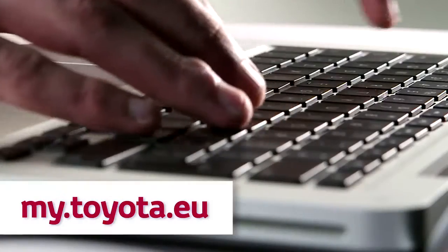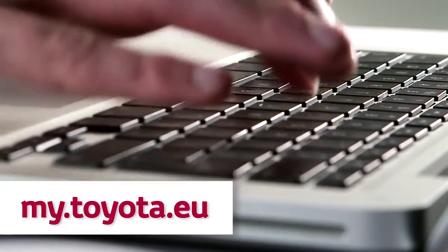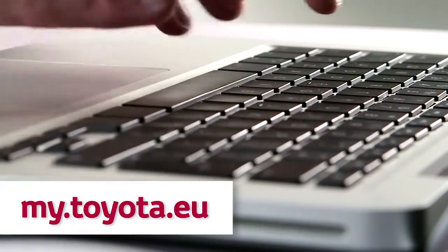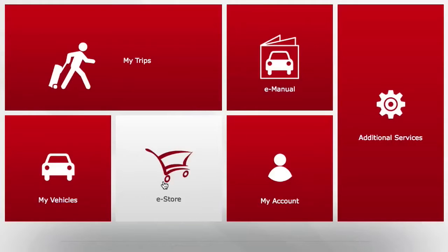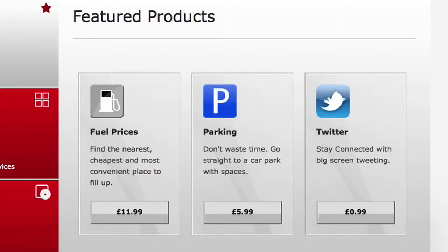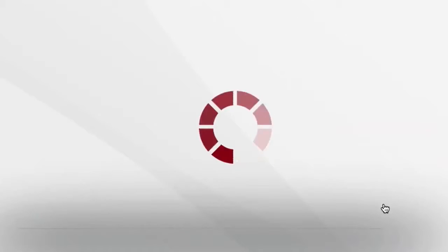To purchase apps for your device, you'll need to log onto the Toyota Customer Portal. Click on eStore to see our selection of Toyota apps, including Twitter. Now click on the price button to get more information on your app.